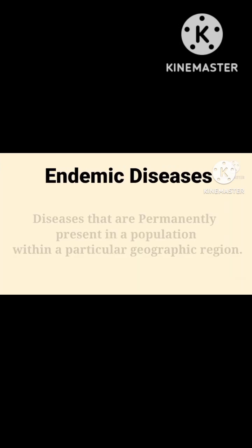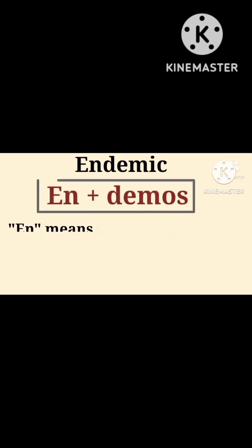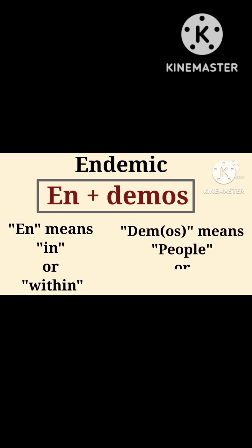Endemic diseases. Diseases that are permanently present in a population within a particular geographic region are called endemic diseases. The word endemic is derived from the Greek. The prefix 'en' means 'in' or 'within,' and 'dem' means 'people' or 'population.'